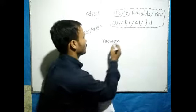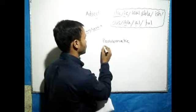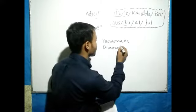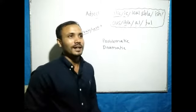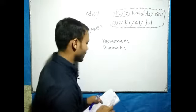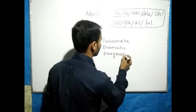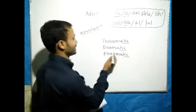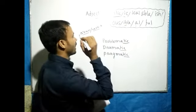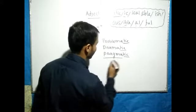Problematic — the word 'problematic' means 'full of problems' or 'problematic in nature.' This is an example of how a word we know, like 'drama,' is used. By understanding this technique, we can see how adjectives are formed — when we form an adjective, we all know what it means.